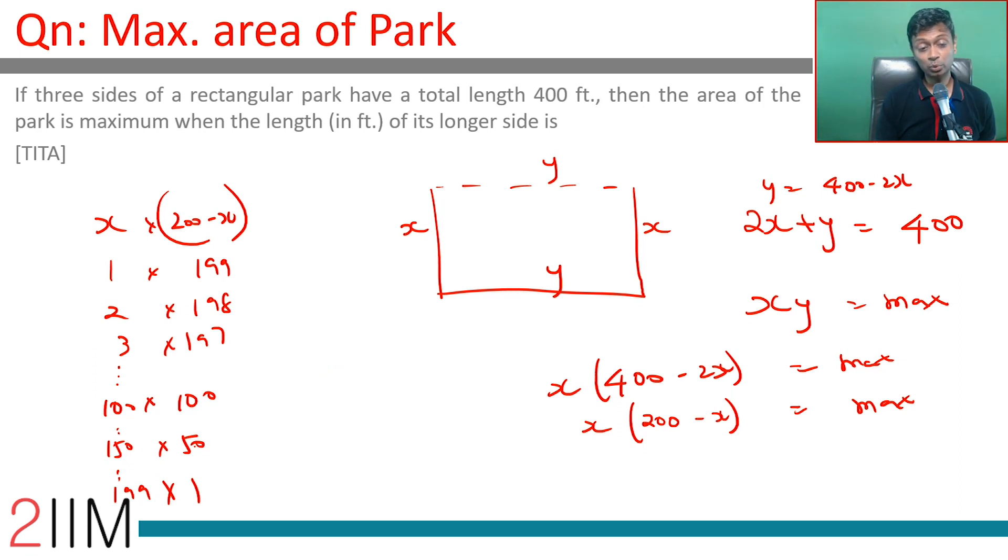150 times 50 is 7,500. This is 10,000. The numbers keep on increasing till they become equal and then keep falling. Their maximum...